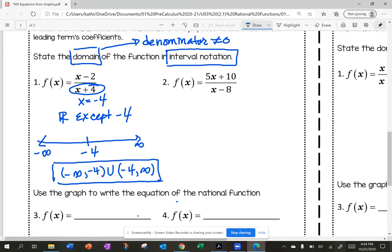Can you pause the video for a minute and do number two? So how'd you do? So number two, x cannot equal eight. So I would write that as negative infinity to eight, union with eight to infinity.